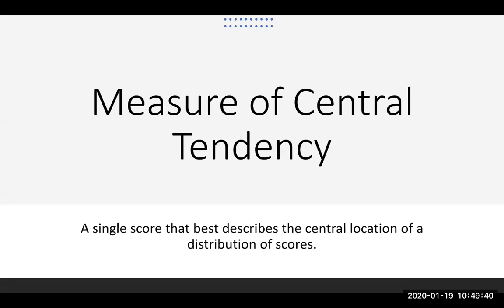Today we're talking about measures of central tendency. A measure of central tendency is a single score that best describes the central location of a distribution of scores. This is one answer — a single score that tries to represent the best score for all the responses we have. That's a pretty tough task. You have lots of answers, and you want one score that best represents everybody.